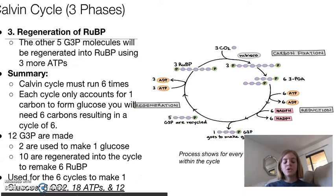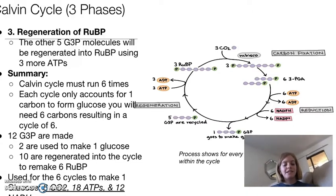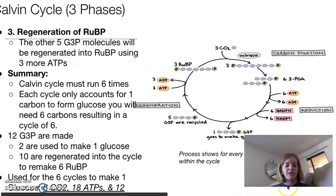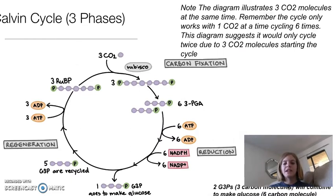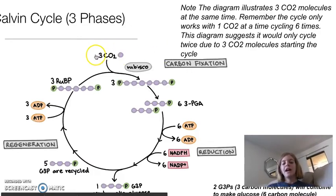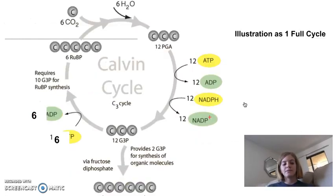So the resulting reactants needed for all six cycles are six carbon dioxides, which should look familiar from the general equation, 18 ATP, and 12 NADPH. This diagram is only showing three carbon dioxide molecules at a time, but what really happens is one CO2 goes through at a time, and it has to happen six times. So this diagram is a little bit of a misnomer, but the pictures are good.